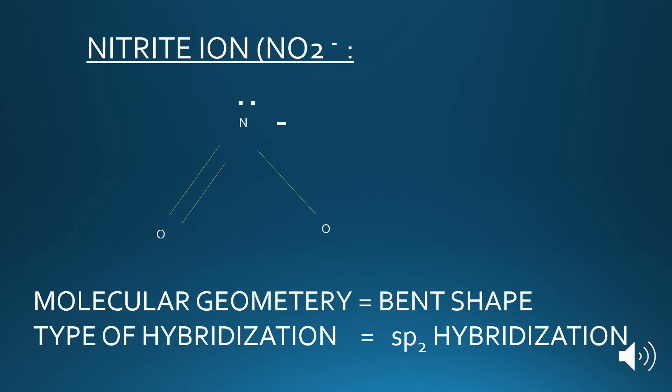Now let's talk about the nitrite ion. In the case of the nitrite ion, three electron pairs are attached around the central atom nitrogen. When three electron pairs are attached around the central atom, the type of hybridization is sp2 hybridization. The molecular geometry and shape is a bent shape, which you can easily see in the diagram.